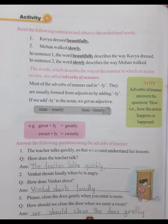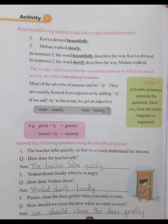If we add -ly to a noun, we get an adjective. Examples: man - manly, time - timely. Adverb of manner examples: great plus -ly equals greatly, sweet plus -ly equals sweetly. Answer the following questions using adverbs of manner.